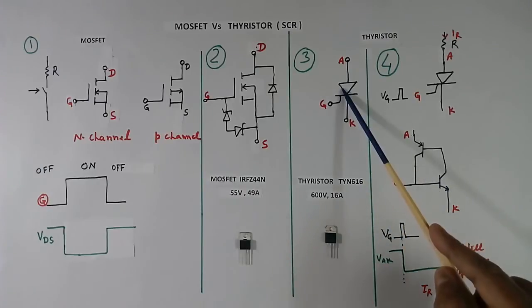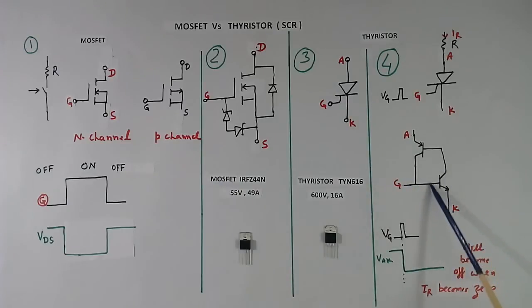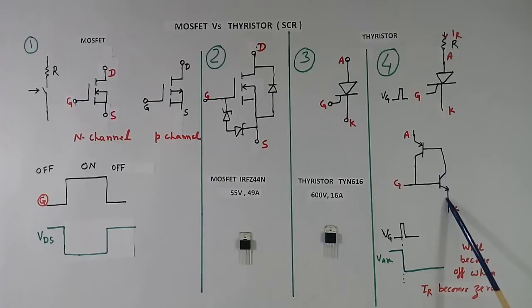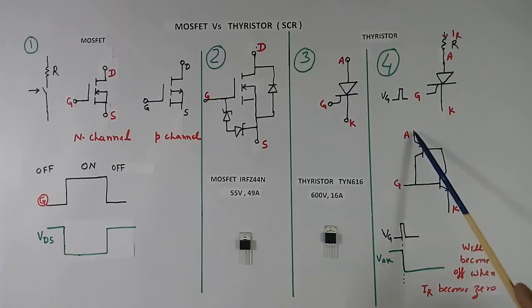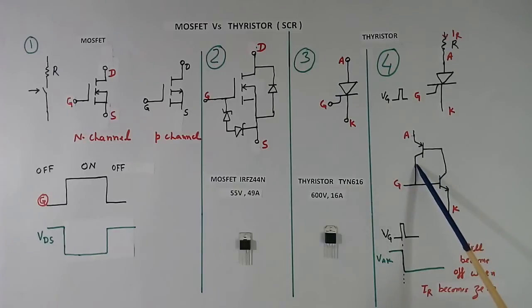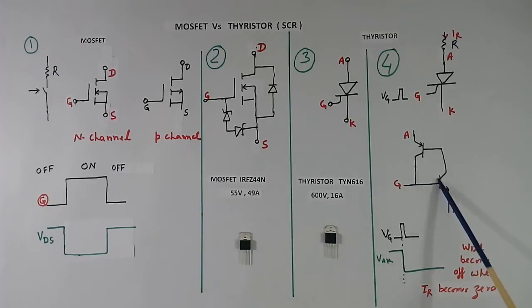This is the circuit inside of this thyristor working. This is an NPN transistor, this is a PNP transistor. When we give a gate pulse here, base current flows and this transistor becomes ON. As soon as this transistor becomes ON, current flows like this, so in this base also current will flow. When this current flows, this also becomes ON. As soon as this becomes ON, current will flow — now gate is not required. Gate current here will be supplied by this base current, so this gate latches.